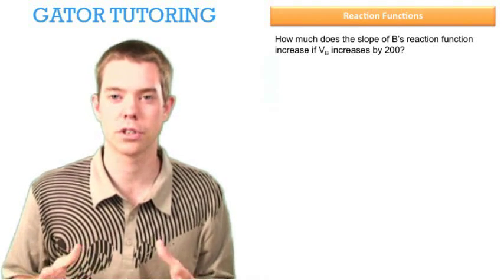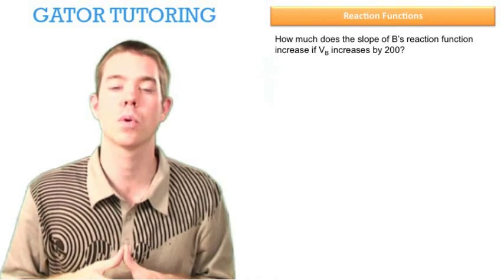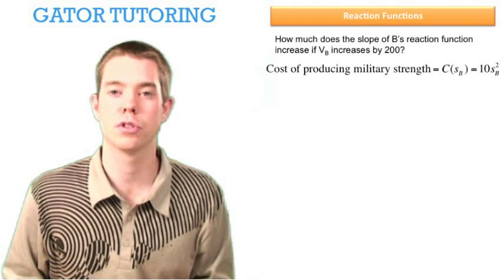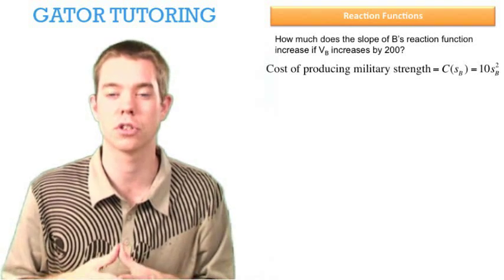Where to start? This is a tricky question. First, we want to organize all our thoughts. We know the cost of producing military strength equals 10*SB^2, because now we're focused just on country B.